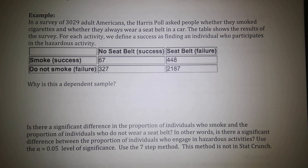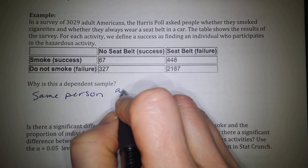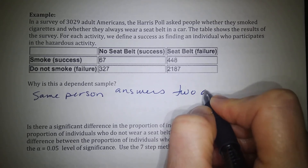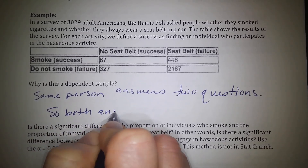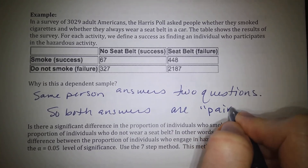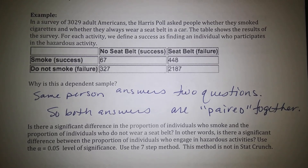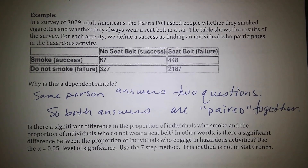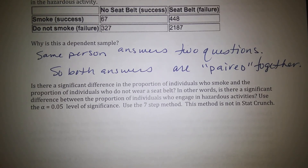Now in StatCrunch, going back to the Prevnar hypothesis test example: go to Stat > Proportion Stats > Two Sample, and select 'with summary' since we don't have individual data points. For sample 1 (Prevnar users): 107 successes out of 710. For sample 2 (control group): 67 successes out of 611. We conducted a hypothesis test of whether there was a difference between the two proportions.